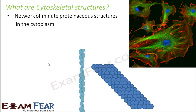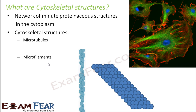Cytoskeleton structures are a network of minute proteinaceous structures present in the cytoplasm. Everything inside a cell is made up of proteins, lipids, or carbohydrates — these molecules are fundamental to all life forms on Earth. We will spend another lesson understanding these molecules. The cytoskeleton structures — microtubules and microfilaments — are networks of protein structures in the cytoplasm.